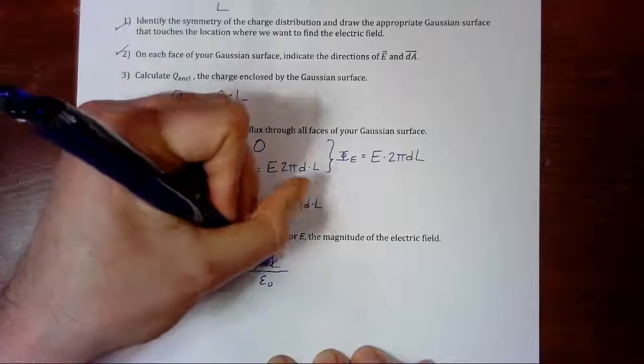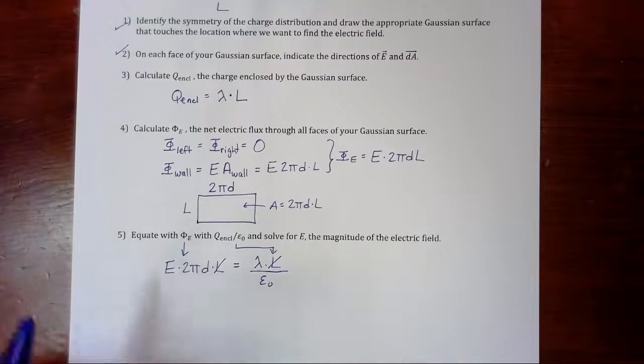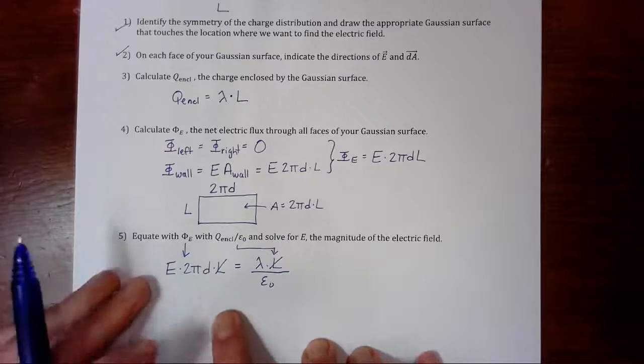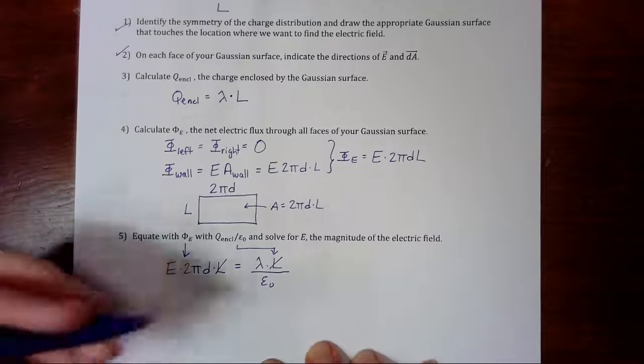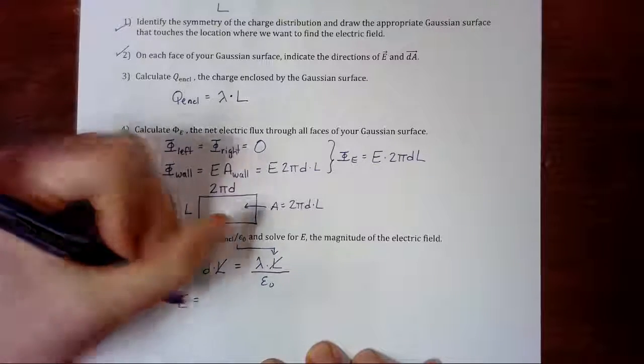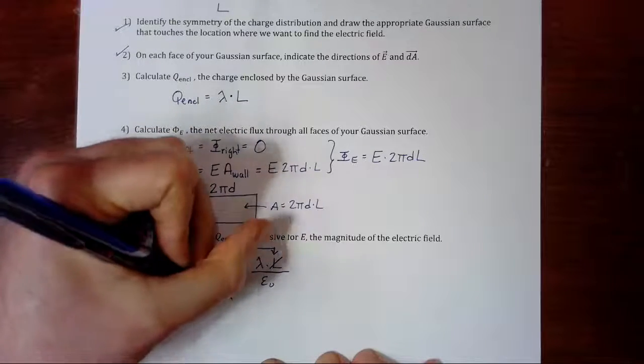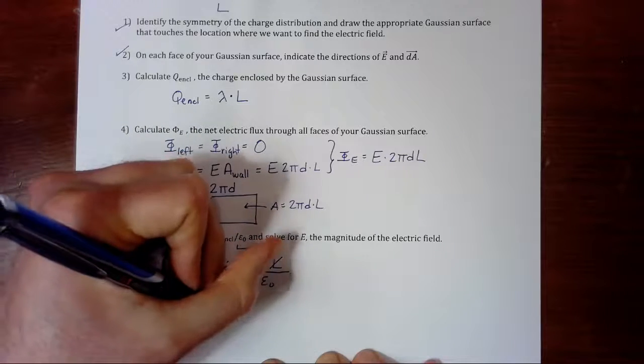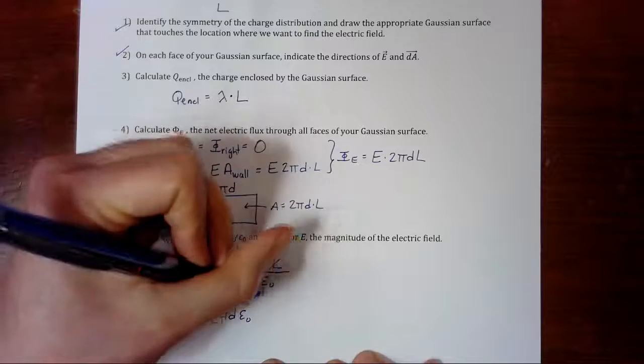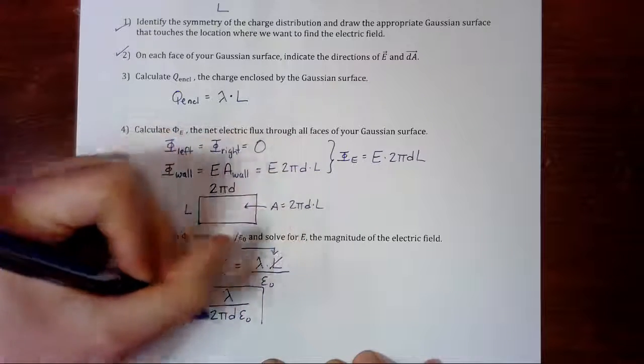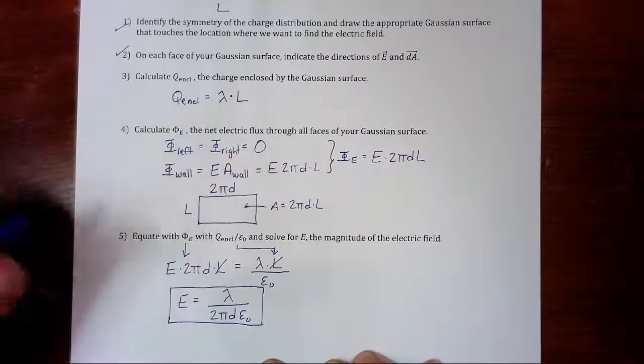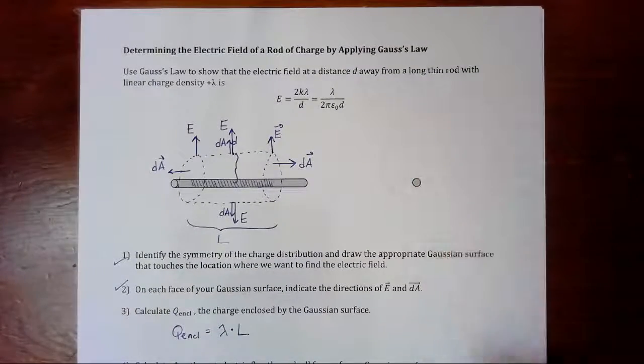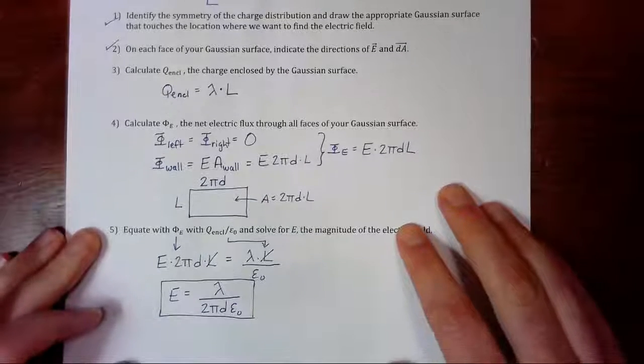Notice now the L's cancel, so the length of our imaginary Gaussian cylinder didn't matter. And then we just need to rearrange and solve for E. So that means E is going to be equal to lambda divided by 2πD times epsilon zero, which is exactly what we were supposed to get based on what we had previously derived.